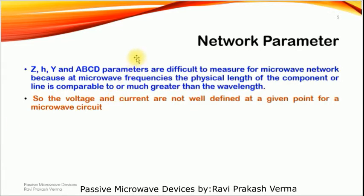Network parameters — Z, H, Y, and ABCD parameters — are used for circuit analysis at lower frequencies. But as frequency increases, the wavelength decreases, and the wavelength of the signal becomes comparable to the component dimensions. That is why we cannot use these parameters for higher frequencies — voltage and current are not well defined at a given point for microwave circuits. At higher frequencies, we use the distributed parameter method rather than the lumped parameter method.